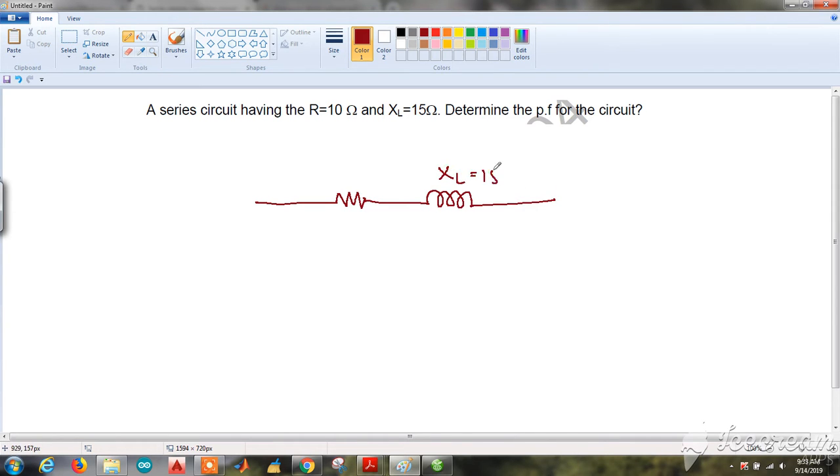XL is 15 ohms and resistance 10 ohms. Determine the power factor. What is power factor? Cos φ. Now we have already solved these types of problems in four different methods: by impedance triangle, by basic trigonometry.